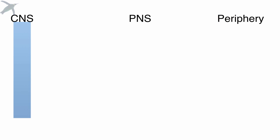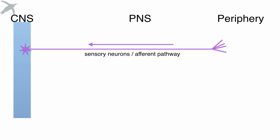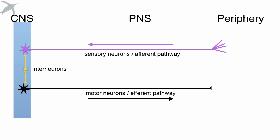So here's the overall view. We've got the periphery and the peripheral nervous system, which brings information from the periphery into the brain and the spinal cord. This happens via a pathway we refer to as the afferent or sensory pathway. Within the brain and spinal cord, we have interneurons that lie entirely within the CNS. And then coming out from the CNS back to the periphery, we have what we call the motor or efferent pathway — and that's actually what we are going to be looking at today.